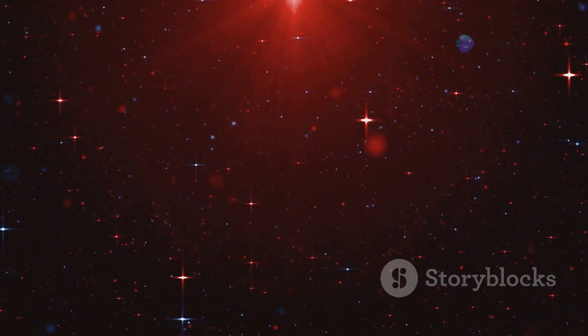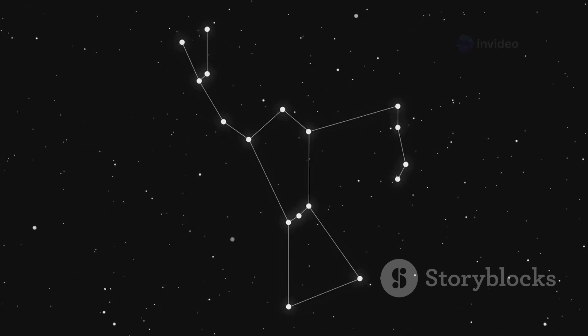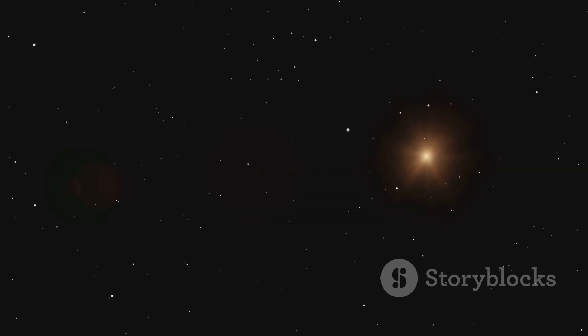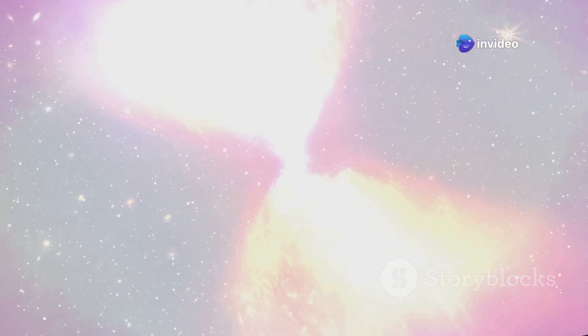Red giants are impressive in size. Betelgeuse, a famous red giant in the constellation Orion, is about 700 times larger than the sun. If Betelgeuse were in our solar system, it would extend beyond Jupiter's orbit. But even Betelgeuse pales in comparison to the stars we'll encounter next. We're moving up the cosmic ladder from giants to supergiants.